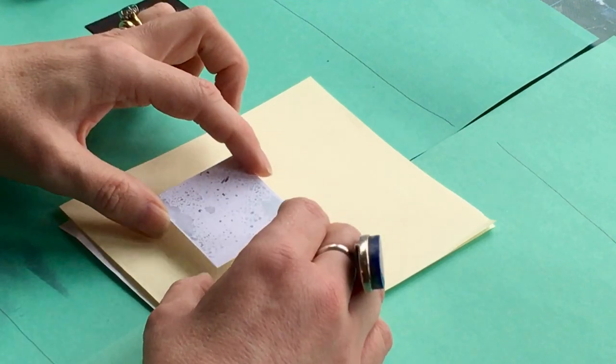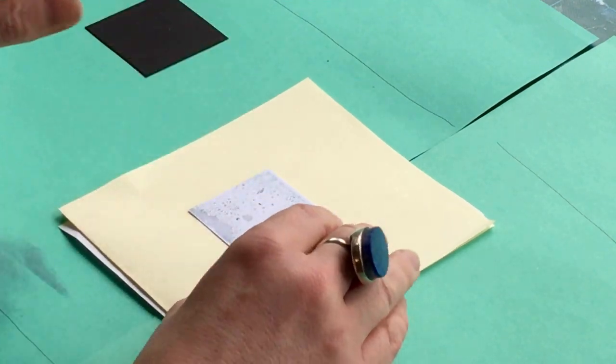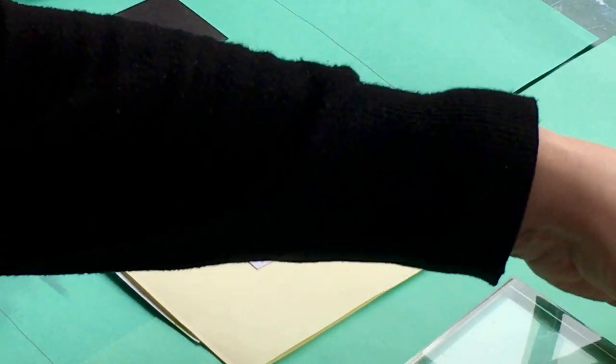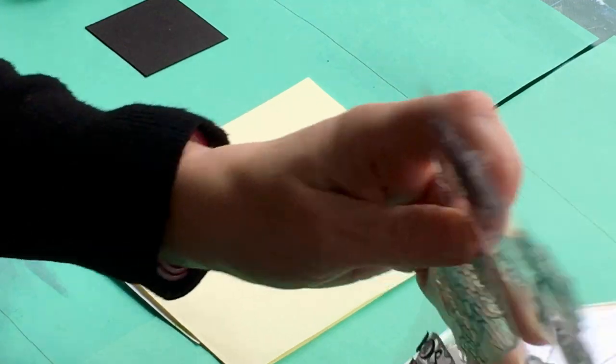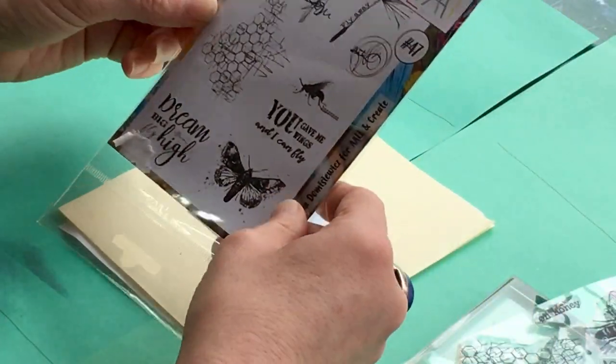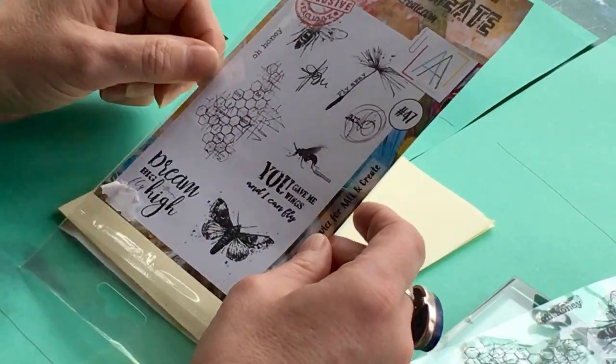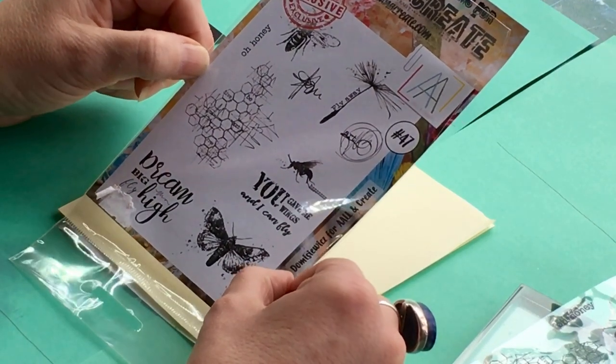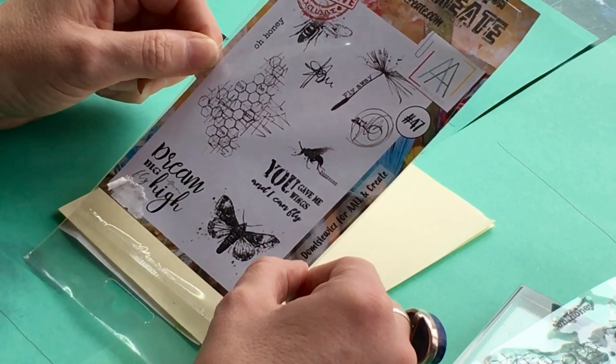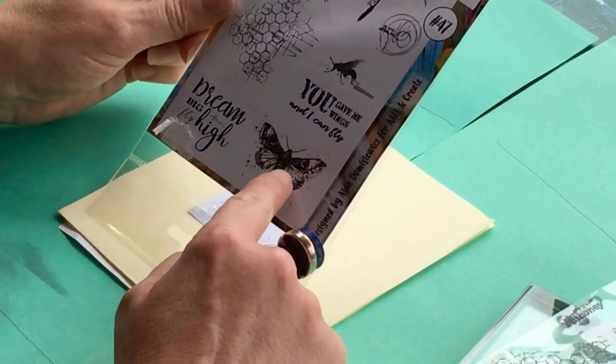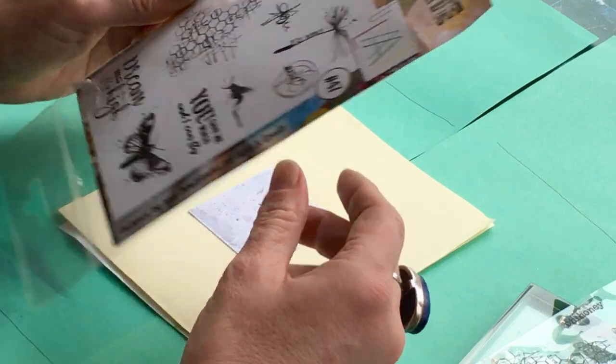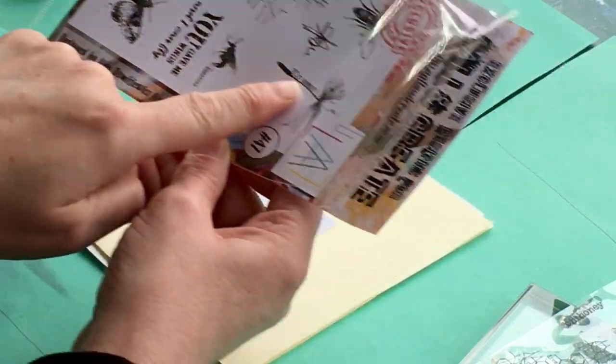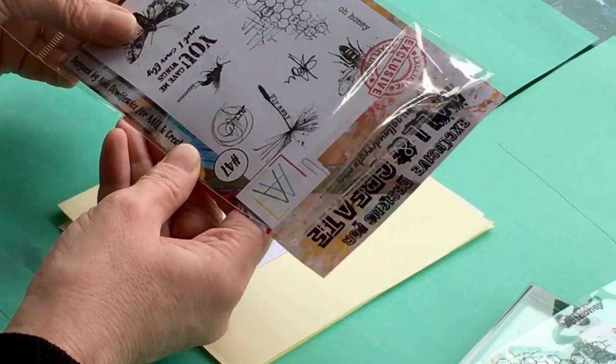Now what I'm going to do to add a little bit of depth to this is use a background stamp from this rather lovely stamp set by Out and Create. It's got some lovely sentiments: 'You gave me wings and I can fly,' 'Dream big, fly high,' there's a gorgeous moth there, this sprig of foliage with 'fly away' written on it, really beautiful.